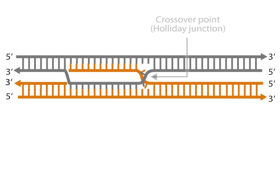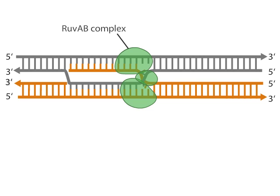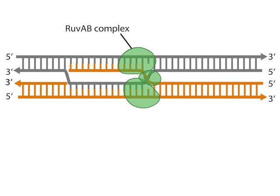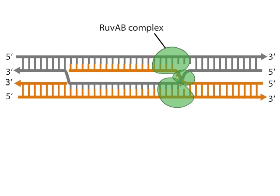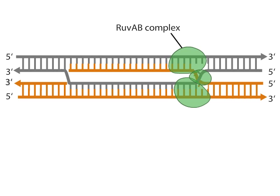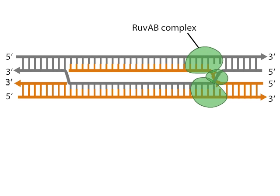Other recombination proteins called Rav-A and B assemble at the crossover point and pull the donor and recipient DNA strands in opposite directions, extending the invasion in a process called strand assimilation or branch migration.